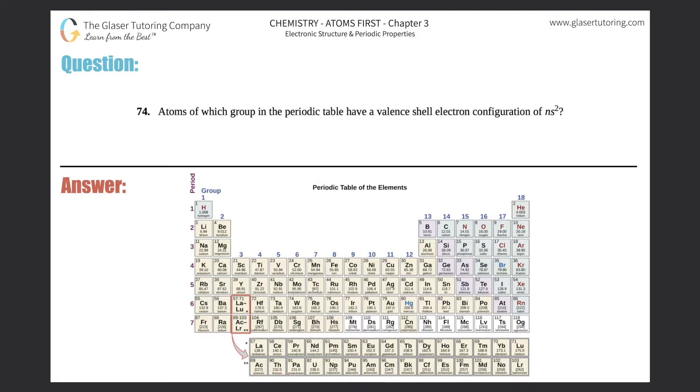Number 74: Atoms of which group in the periodic table have a valence shell electron configuration of ns2? We're talking about what group. Remember, groups go up and down on a periodic table - whether that's group 1, group 2, group 9, or 9B.